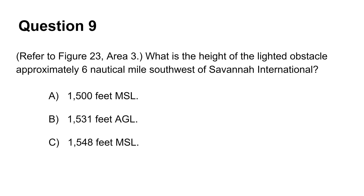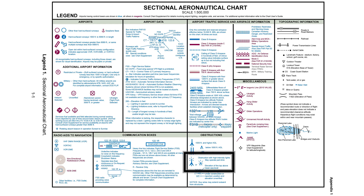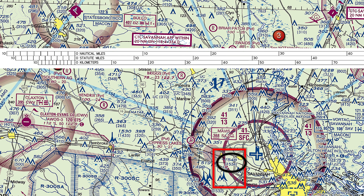The ninth question asks about the height of the lighted obstacle approximately 6 nautical miles southwest of Savannah International Airport. Locate the airport on the map first, then use the scale for nautical and statute miles indicated above the chart. Measuring approximately 6 miles southwest brings us to a lighted structure — we know it is lighted because, referring to the legend, this is how obstructions with high-intensity lights are marked. The top number indicates elevation of the top of the tower at 1548 feet MSL, while the number in parentheses indicates height above ground level at 1534 AGL. The only matching answer is C: 1548 feet MSL.